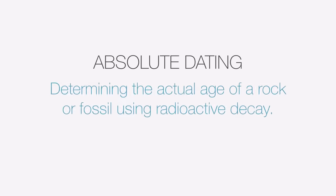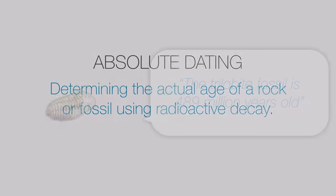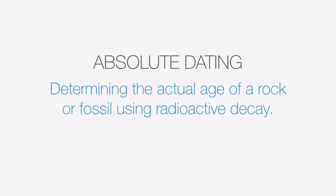To get started, we need to look at something called absolute dating. Absolute dating of rocks involves the use of a method known as radioactive dating, carbon dating, radioactive decay. This allows us to figure out the actual age of a rock or a fossil — an actual numeric age. For example, if I were to say this trilobite fossil is 489 million years old, that's an example of absolute dating because I'm using a specific number.